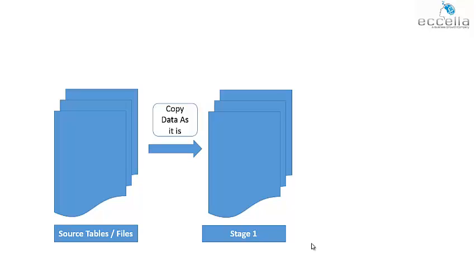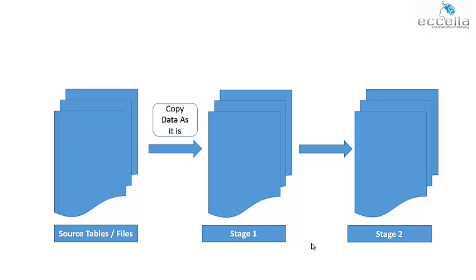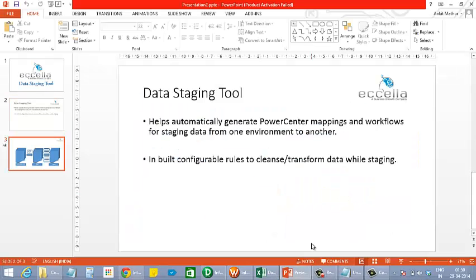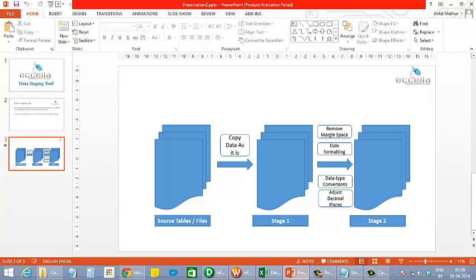The next set of mappings generated by the tool helps apply certain functions on the data in Stage 1, like removing margin space, date formatting, data type conversions, and transfers this data to another location which we will call Stage 2.